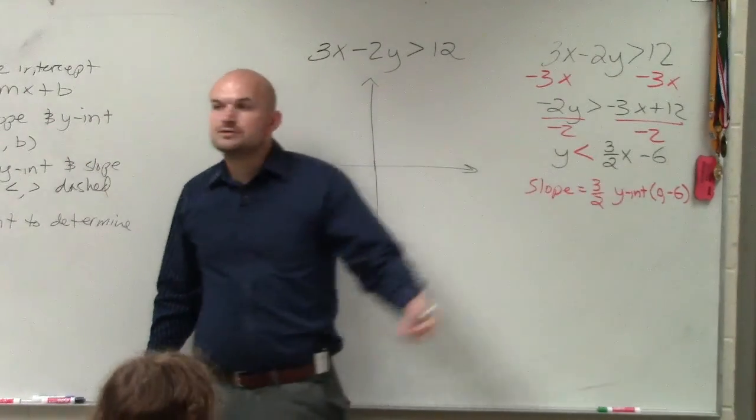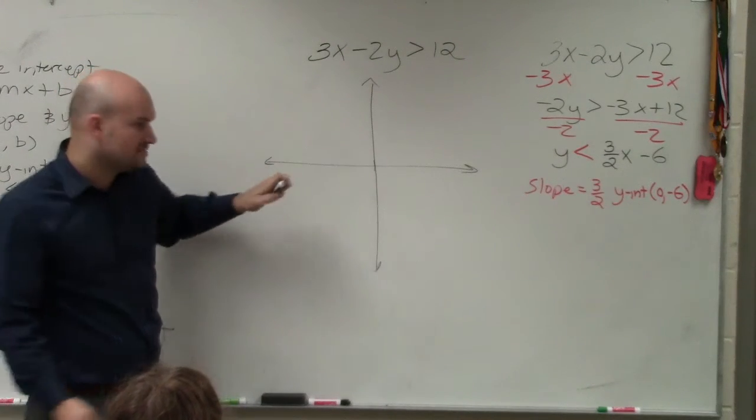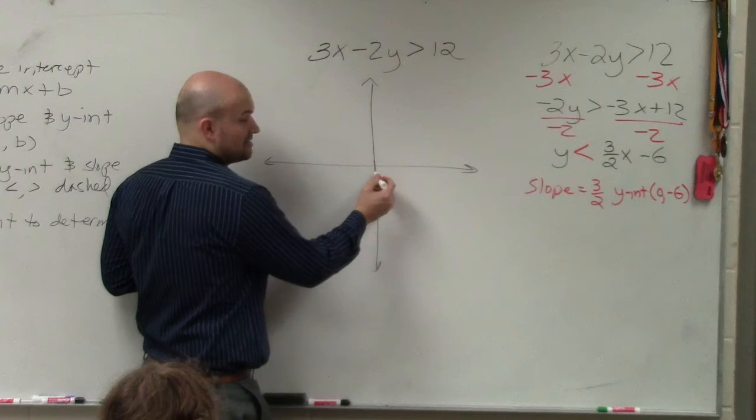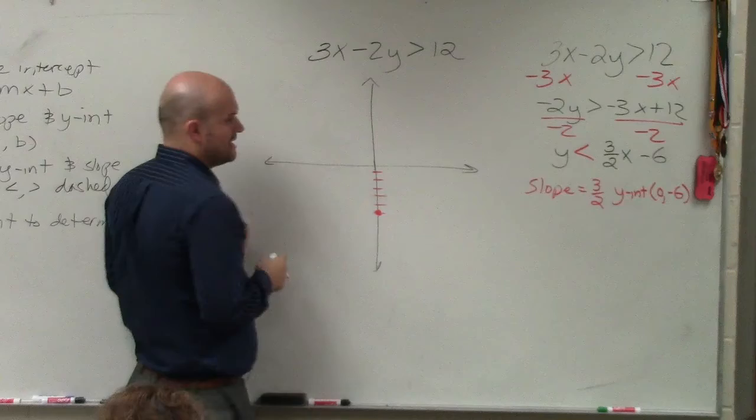OK, so why is that helpful? Because now, when you guys are getting to this, you can plot the y-intercept, which is 0 comma negative 6, which is 1, 2, 3, 4, 5, 6.